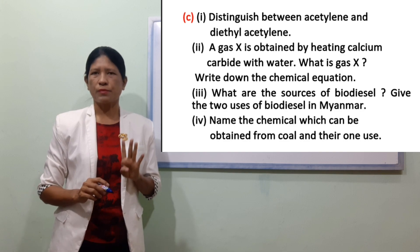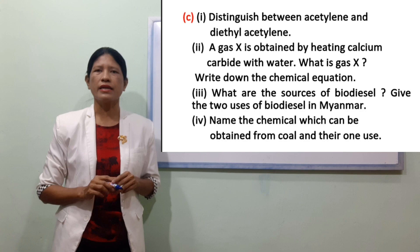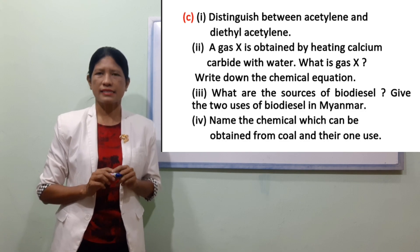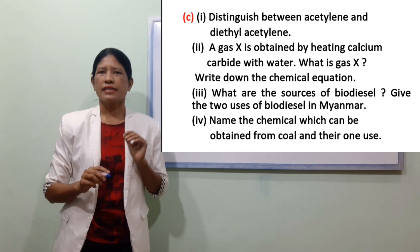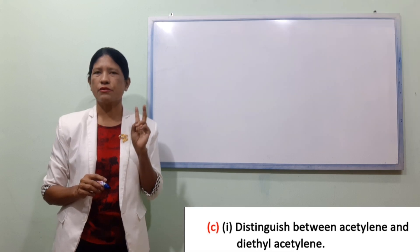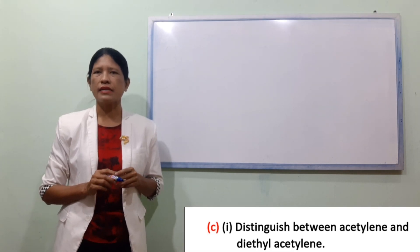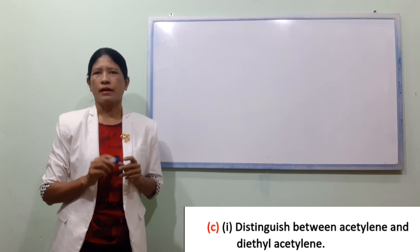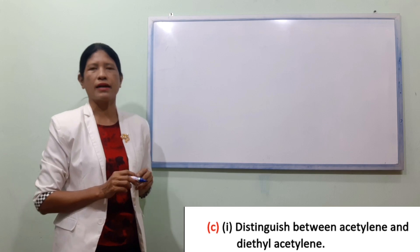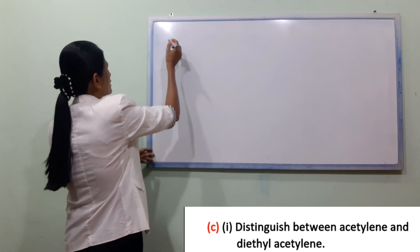So we can use Ka to distinguish between acetylene and diethylacetylene, as needed for the acidity. But we also need to use the equation to account for acidity. So if we have acidity in number one, we need to use the acidity equation all the way through, and then the rest is given by the equation we have.